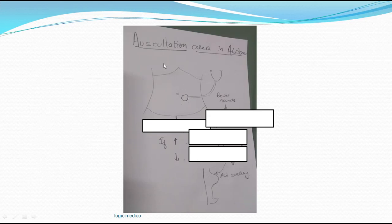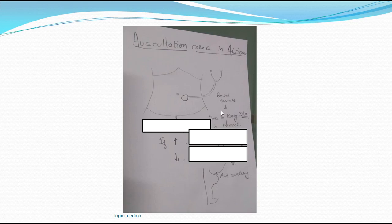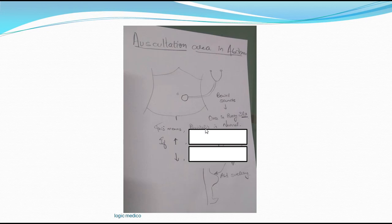The auscultation areas in the abdomen are mainly situated around the umbilicus, covering four quadrants: upper right, lower right, upper left, and lower left. Bowel sounds will be heard once every 30 seconds normally — a gurgling sound like water gushing through a pipe. This indicates that peristalsis is intact.